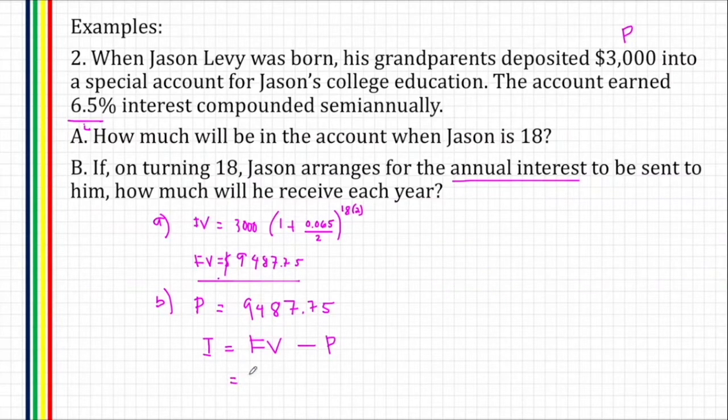So the future value for 1 year is $9,487.75 times 1 plus 0.065 over 2 and raised to 1 year. And there are 2 compounding terms per year.